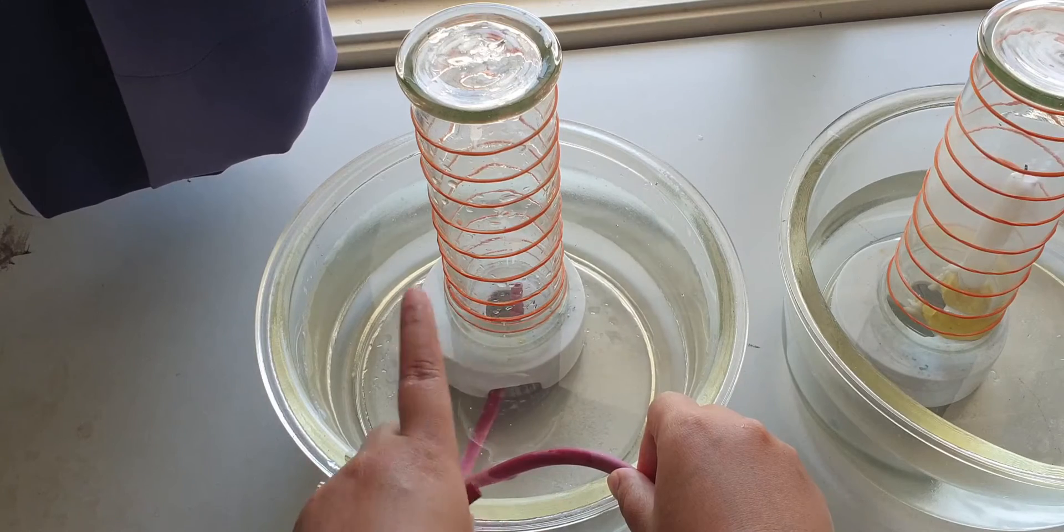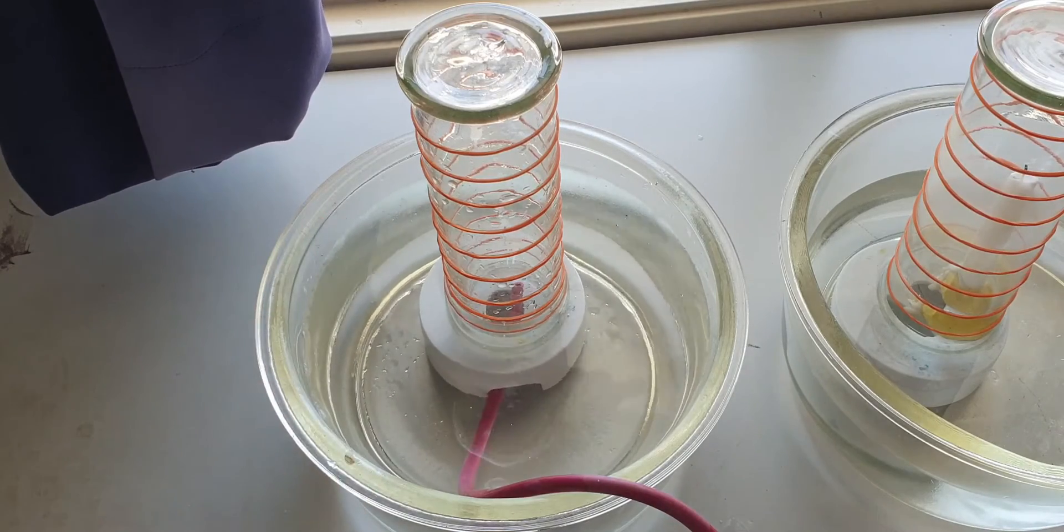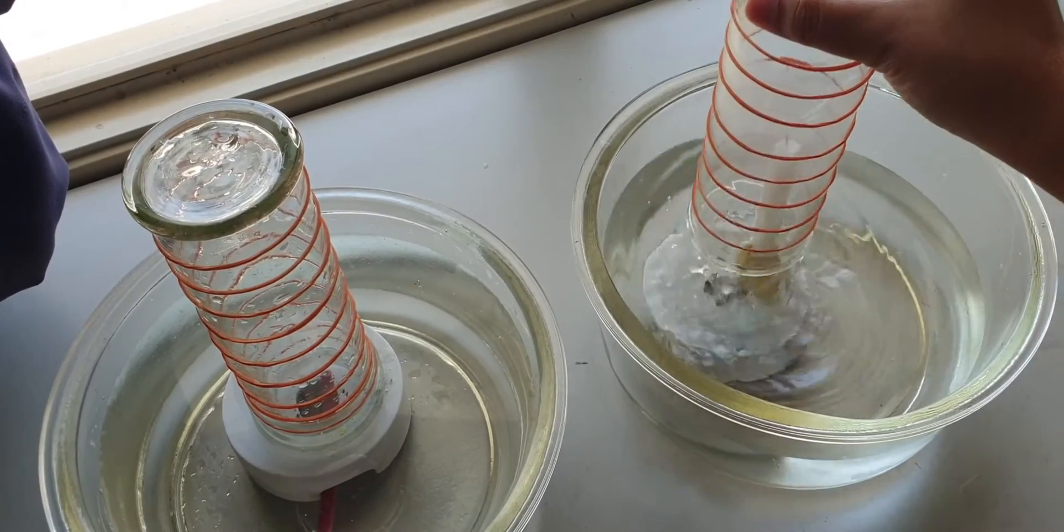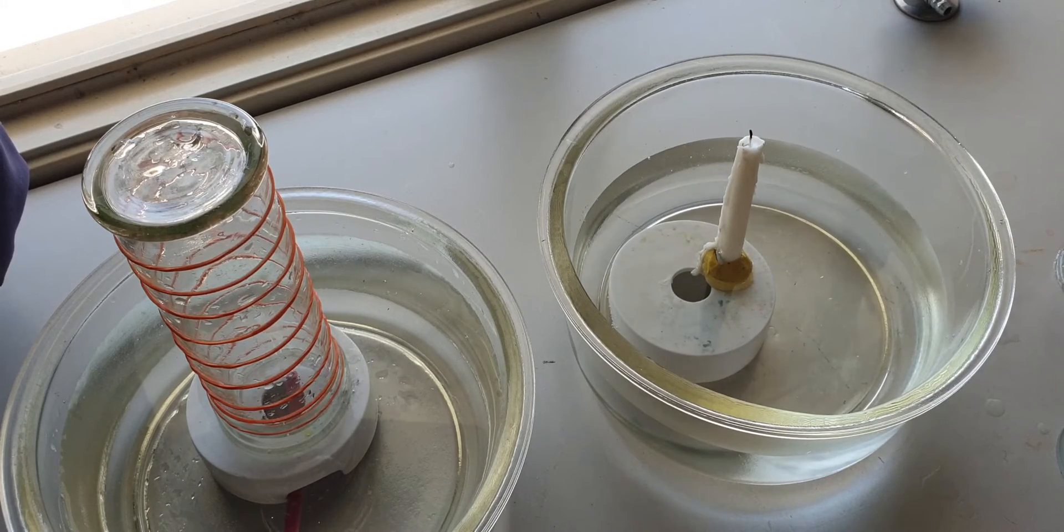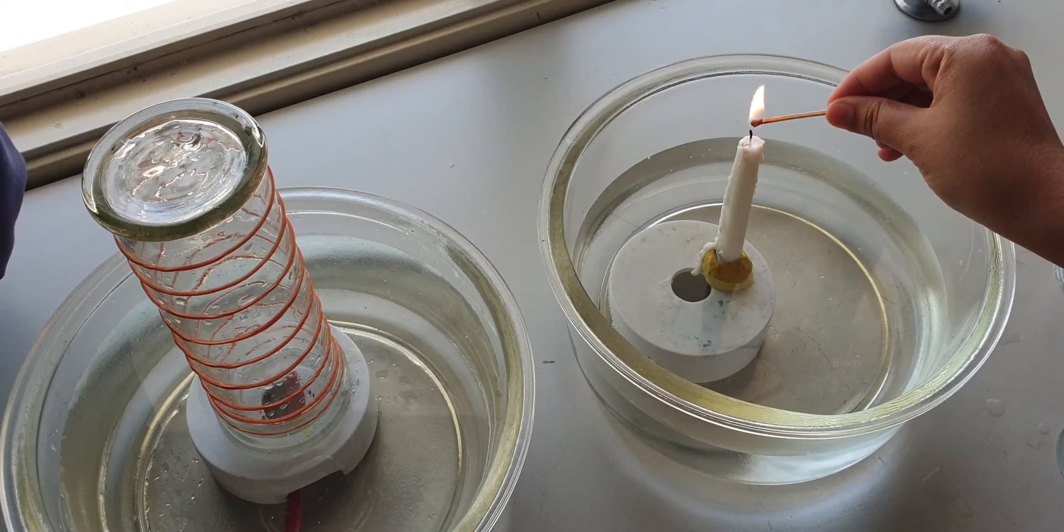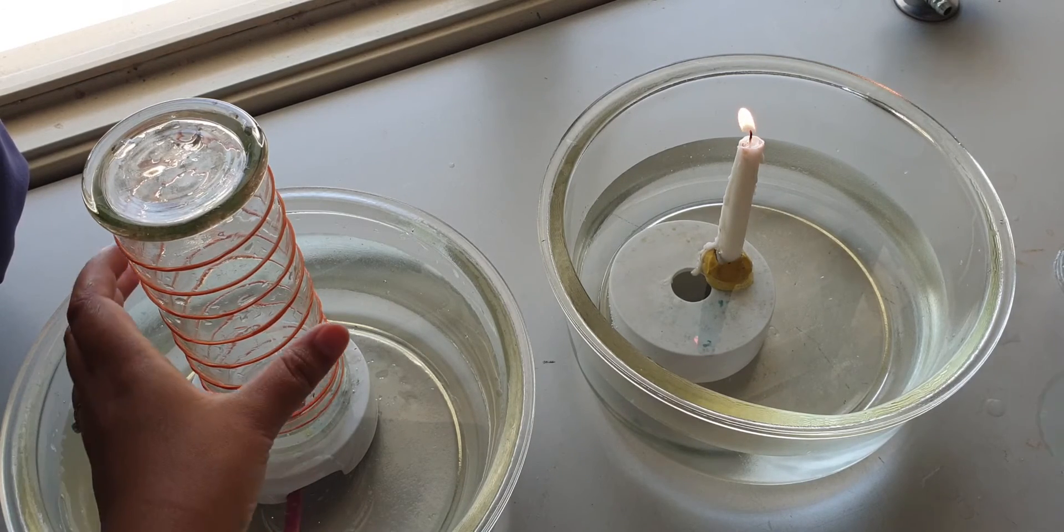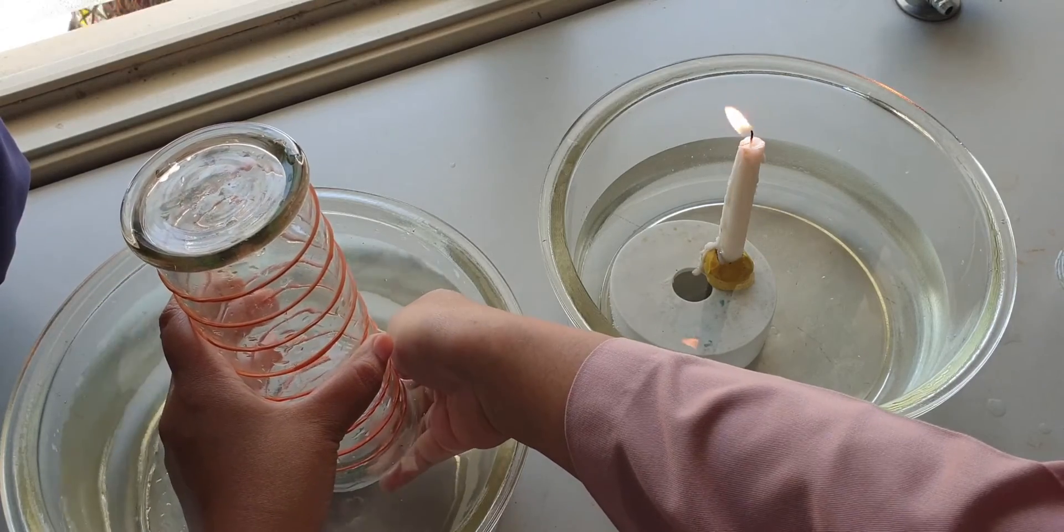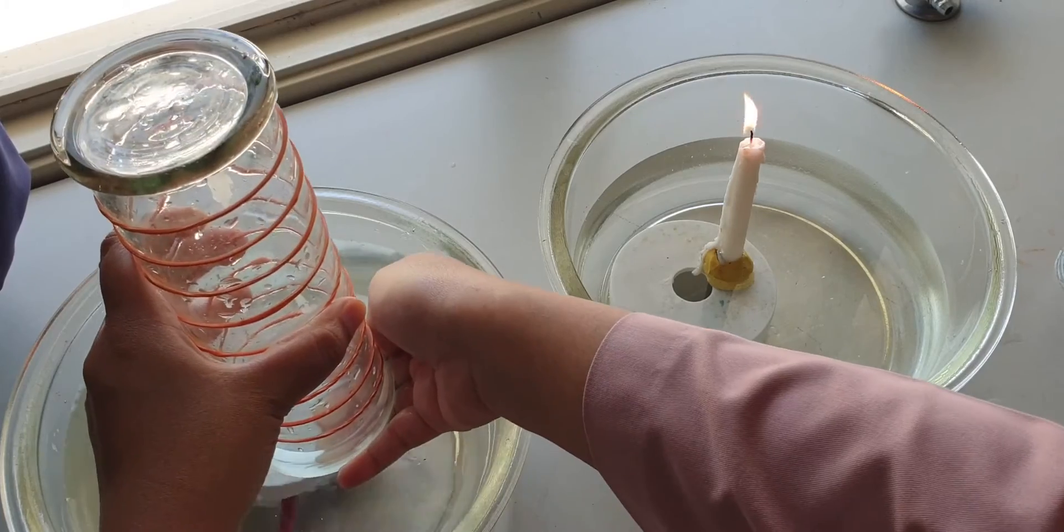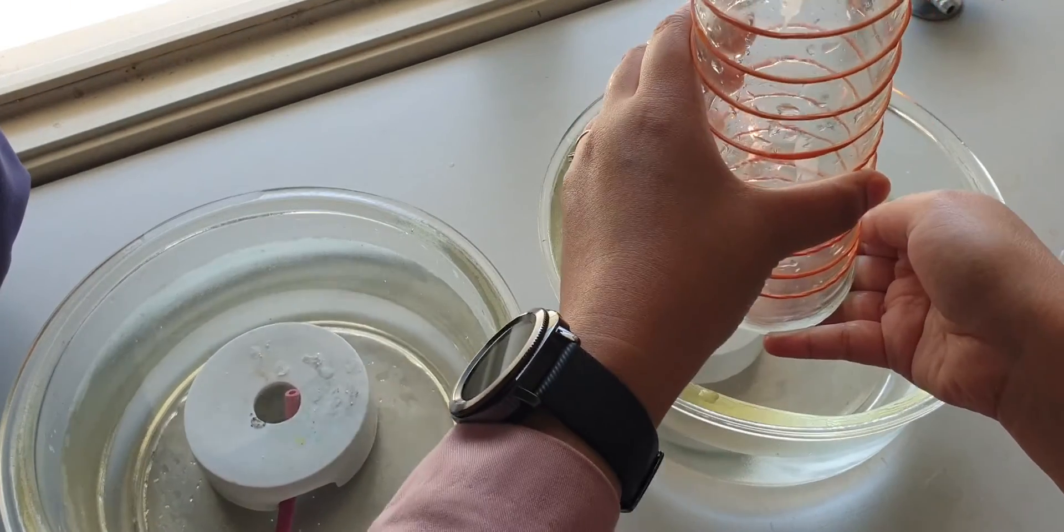That's it. The gas jar is already filled with exhaled air. What I'm going to do now is take this one out. I'm going to light up the candle again to test the oxygen level in the exhaled air. I'm going to carefully cover this up, take it out, remove the water, and carefully invert it onto the candle.